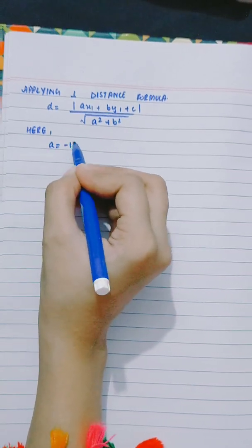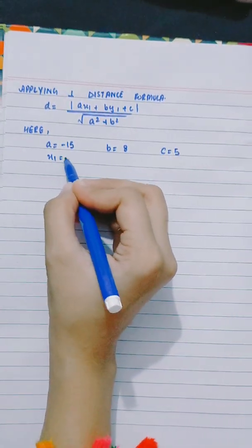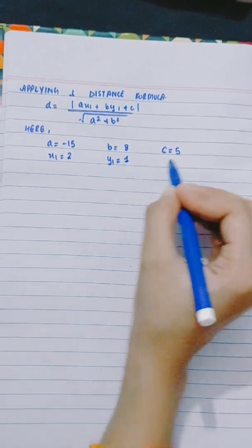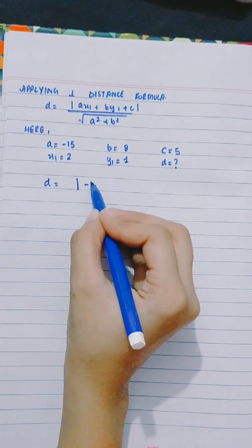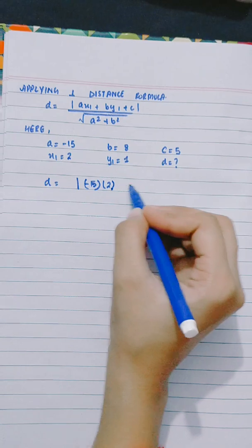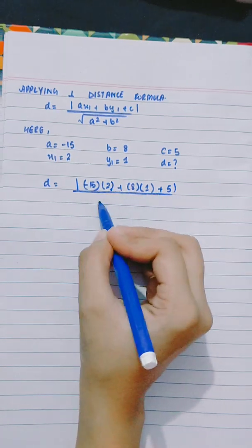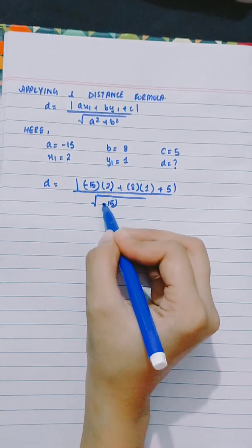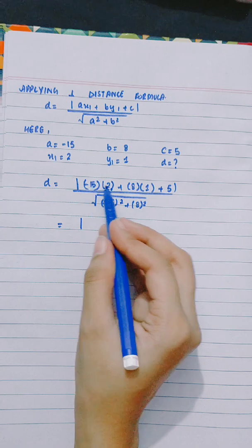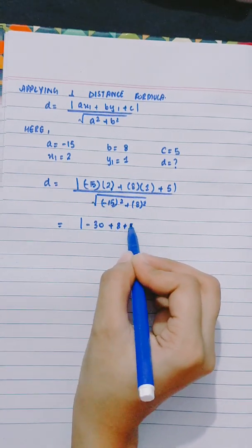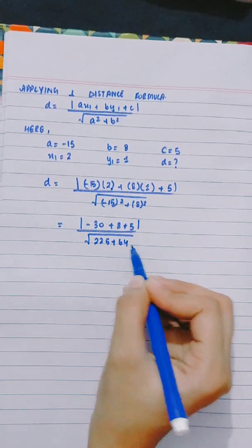Here, a is equal to minus 15, b is 8, c is 5, x₁ is 2, y₁ is 1, and we have to find d. So d equals mod of (minus 15 into 2) plus (8 into 1) plus 5, divided by the square root of (minus 15)² plus 8².